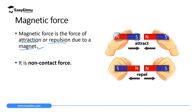Attraction takes place when two opposite poles — that is north pole and south pole — are brought close to each other. When they are brought close to each other they attract or pull each other. Remember we defined force as a pull, so if there is a pull between two magnets they generate what we call a magnetic force.